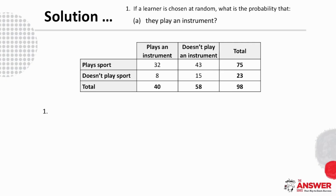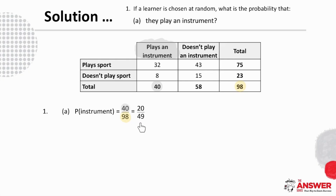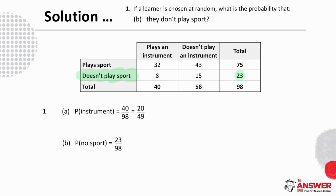For A, the probability of playing an instrument: we find the total number of students that play an instrument, which is 40. So to find the probability, we put 40 over the total number of students, and this simplifies to 20 over 49. Then for B, the probability that they don't play sport: we find the total that don't play sport, which is 23, and we put 23 over the total number of students. So the probability is 23 over 98.